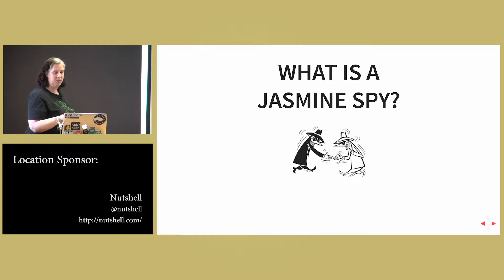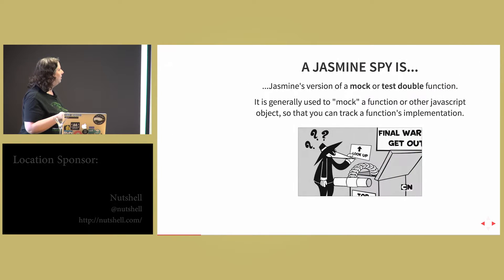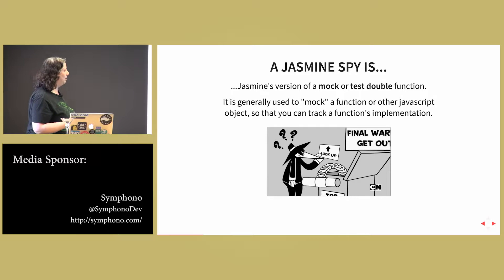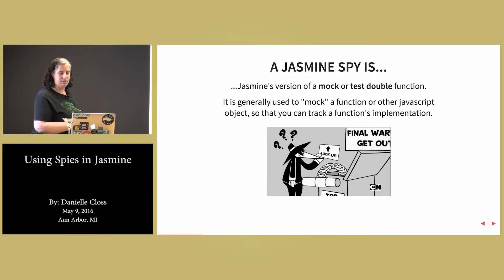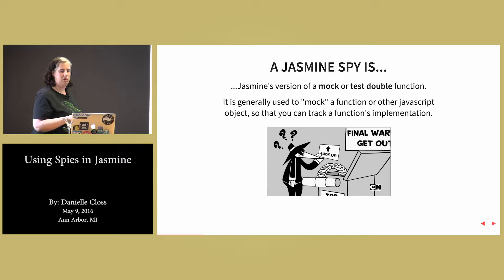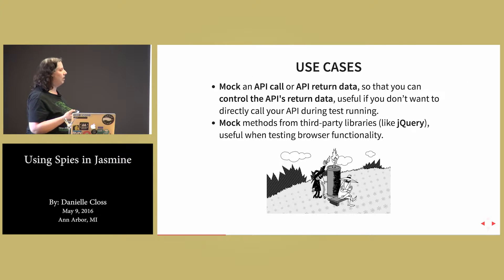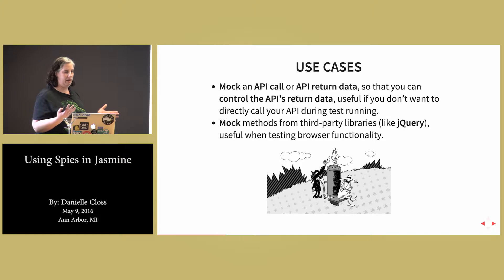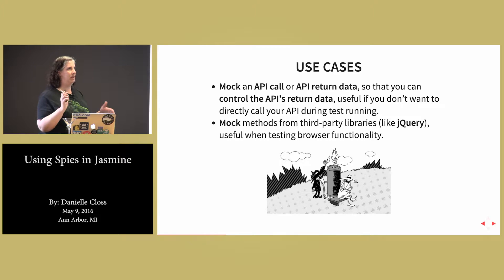So, what is a Jasmine spy? You may be wondering this, although everybody who's used them is not wondering this. Well, first of all, Jasmine is a testing framework for JavaScript, and a Jasmine spy is basically Jasmine's version of a mock or test double function. It is generally used to mock a function or other JavaScript object. You generally want to do this if you want to have more control over your testing, and also if you want to track the implementation of the function. A couple of use cases: you might want to mock an API call or mock the API return data, so you can control the return data instead of relying on your API during testing. You can also mock methods from third-party libraries like jQuery, and you can actually test things like UI functionality like click handlers, which is kind of awesome.